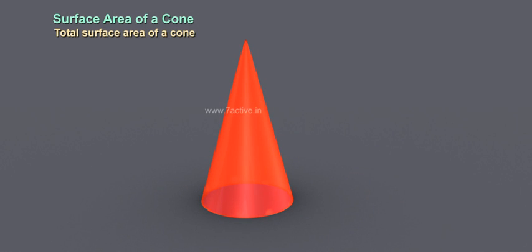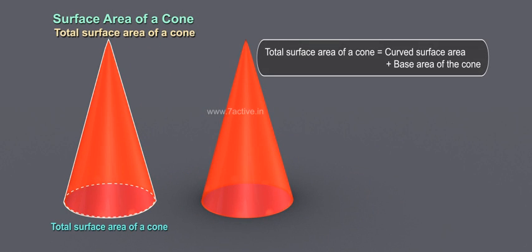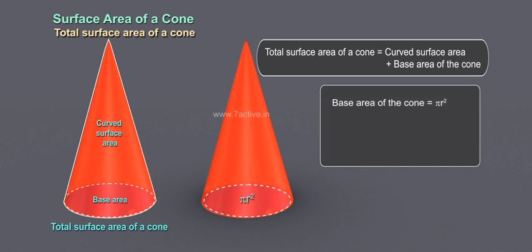Total surface area of a cone is equal to curved surface area plus base area of the cone. Base area of the cone is equal to πR². Thus, total surface area is equal to πR² plus πRL, which equals πR into R plus L.